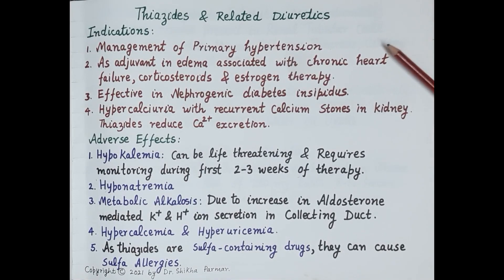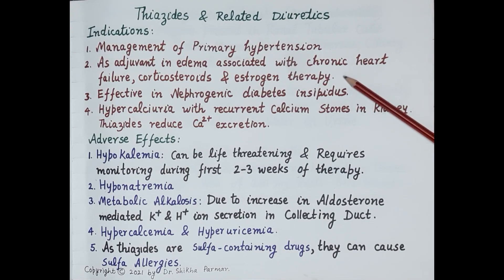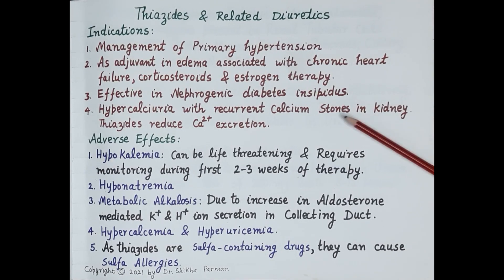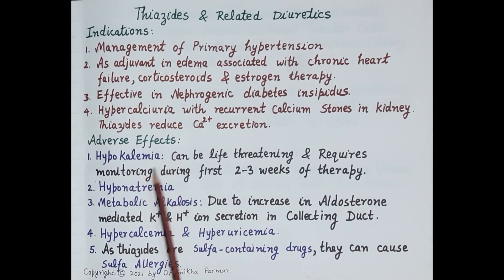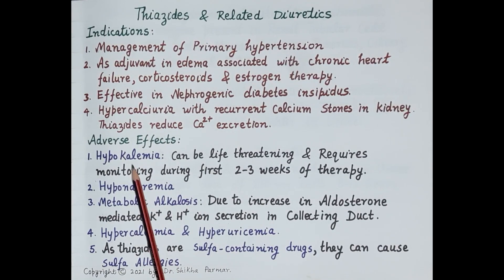Indications of thiazides and related diuretics include: management of primary hypertension; as adjuvants in edema associated with chronic heart failure, corticosteroid, and estrogen therapy; nephrogenic diabetes insipidus; and management of hypercalcemia with recurrent calcium stones in the kidney, since these diuretics reduce calcium excretion.